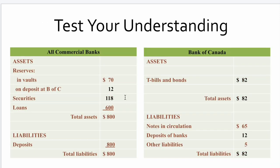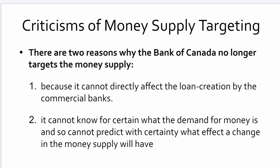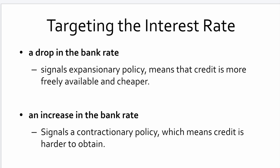Lately, the Bank of Canada has tended to stay away from open market operations, because in targeting the money supply, they can't directly affect what private banks do — private banks could still go out and loan money, so the Bank has very little control over how much money gets loaned out. Also, they can't know for certain what the demand for money is, and can't predict with certainty what effect a given change in the money supply will have. So targeting the interest rate is the key tool used by the Bank of Canada. A drop in the bank rate signals expansionary policy, and a rise in the interest rate signals contractionary policy.